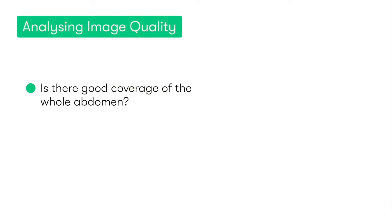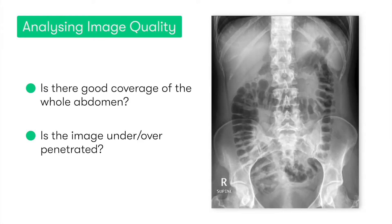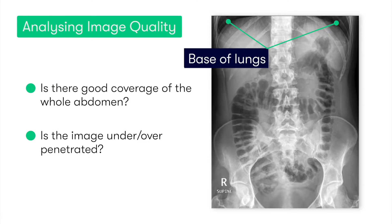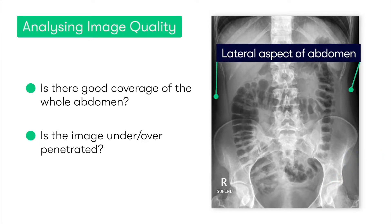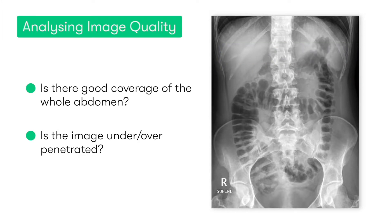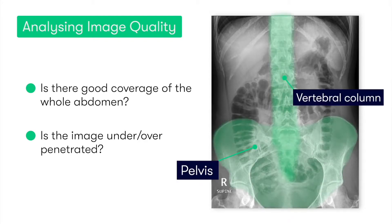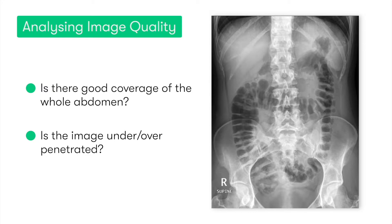When analyzing the image to ensure it's good enough quality, the key things we want to look for are: firstly, if the whole abdomen is covered in the image, and also if the image is correctly penetrated. In an AP view, coverage should extend from the base of the lung superiorly to the proximal femur inferiorly, incorporating the lateral aspects of the abdomen. Adequate penetration is indicated by the visibility of the vertebral column and pelvis posterior to the abdominal contents — if these bony structures aren't visible, the image may be underpenetrated.